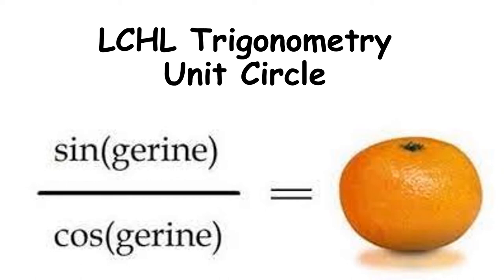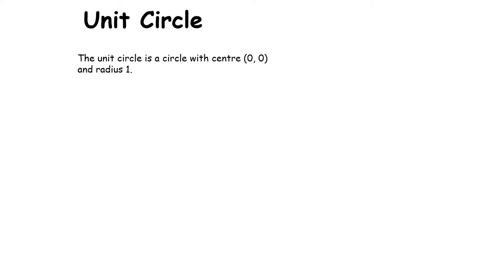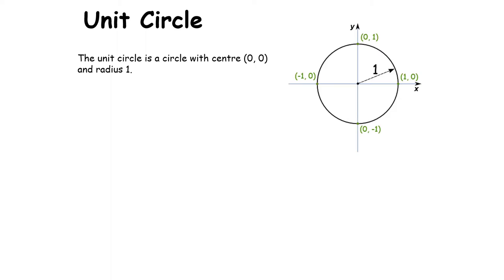Hi and welcome to this Leaving Cert Higher Level Trigonometry video. In this video we're going to specifically look at the unit circle and using the unit circle to find the solution to equations. The unit circle is a circle with center (0,0) and radius 1, so called because the radius is 1 unit. You can see some obvious points on it.